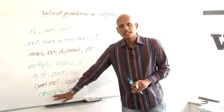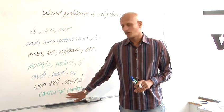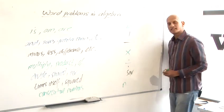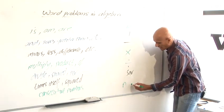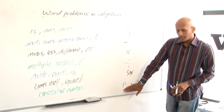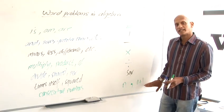And sometimes you'll see consecutive numbers. Well, consecutive numbers, if we call the first of our consecutive numbers n, then the second of the consecutive numbers would be n plus 1. So n would be an unknown number, n plus 1 would be the next number on from that.